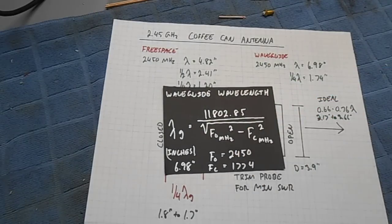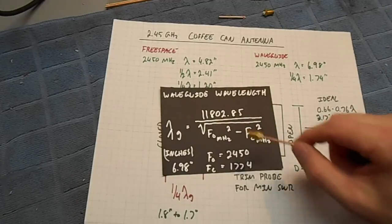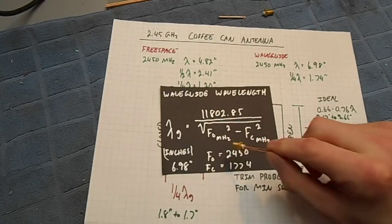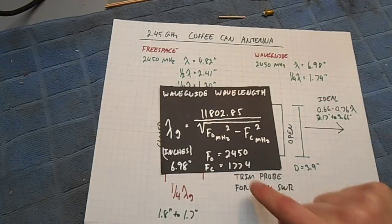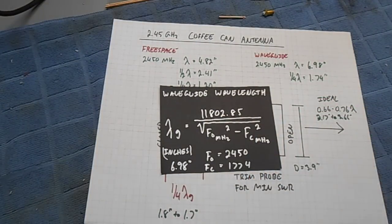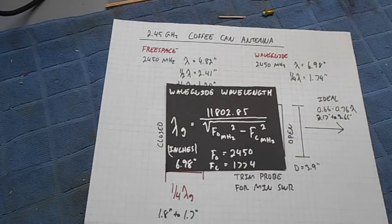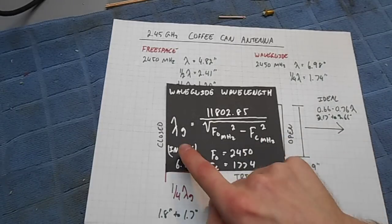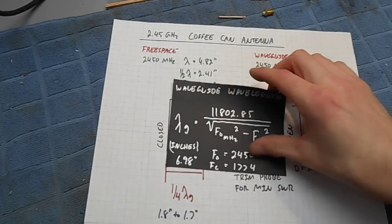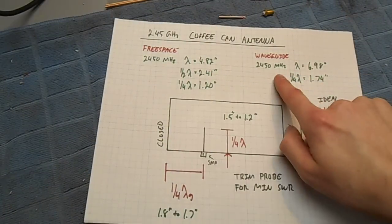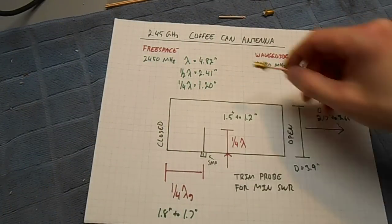Because the waveguide essentially slows down the speed of electromagnetic propagation, the wavelength of our signal is going to be slightly longer. This is determined by this equation. It's based on the operating frequency in megahertz and the cutoff frequency for our low-frequency cutoff, which was 1,774 megahertz. So at 2,450 megahertz, our operating frequency, our waveguide wavelength is going to be 6.98 inches. You can see this is slightly longer than our free space wavelength, which was 4.82 inches.